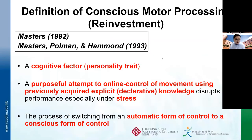For the formal definition: according to Masters in 1992 and Masters and colleagues in 1993, reinvestment was defined as a quality factor or personality trait. It describes a purposeful attempt to online-control movement using previously acquired verbal rules related to the movements — also called explicit declarative knowledge. However, this action will disrupt performance, especially under stress. The process of switching from an automatic form of control to a conscious form of control is called reinvestment.